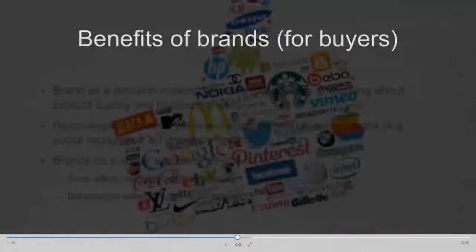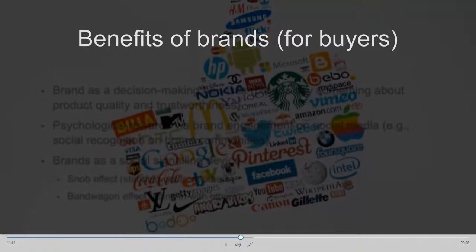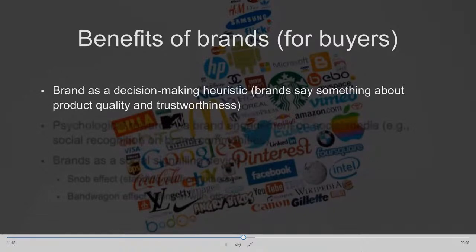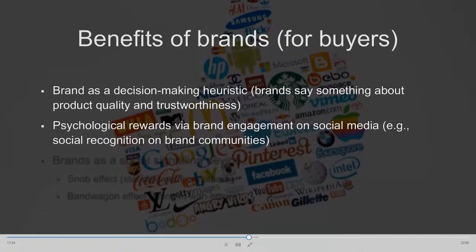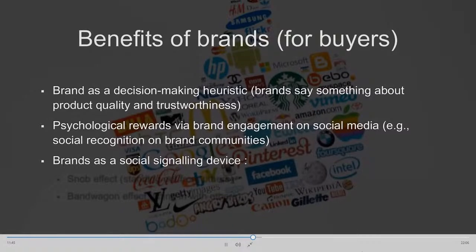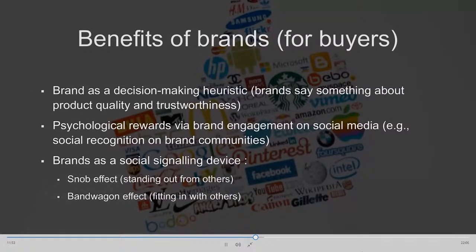We have discussed some of the important perceptions and consumer-based processes needed to create consumer brand equity. Now let's consider why a company would do that. Brands can act as a decision-making heuristic when they say something about product quality, trustworthiness, or the amount of risk associated with a purchase. Consumers can also gain psychological rewards when seen as associated with a given brand by their social circles. Brands can act as a social signaling device, helping consumers stand out from others or fit in with others.